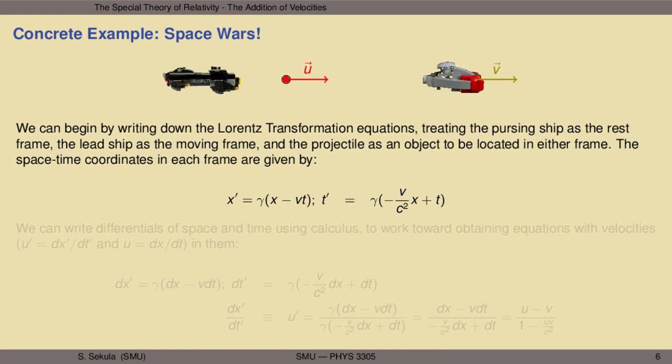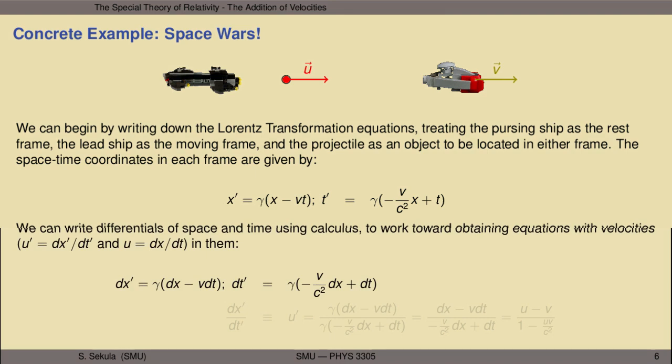The spacetime coordinates of that object in each frame are given as follows. If we have the spacetime coordinates x and t in the rest frame, we can get the spacetime coordinates in the moving frame — the S' frame — using the Lorentz transformation equations, yielding x' and t': the location and the time at which the location is observed for the projectile in the perspective of the lead ship. We can write differentials of space and time using calculus, dx' and dt', which will allow us to work toward obtaining equations with velocities. So u' is the first derivative of x' with respect to t' — the velocity of the object as observed in the lead ship or moving frame — and u is the first derivative of x with respect to t, the perspective of the projectile's velocity from the rest frame.